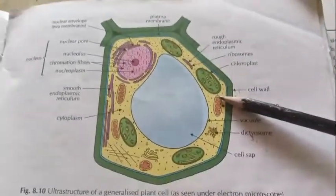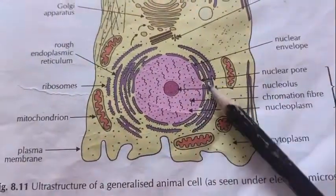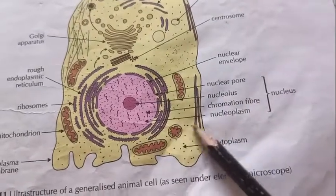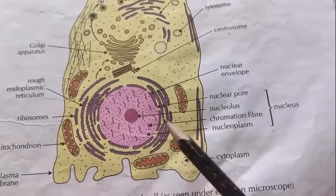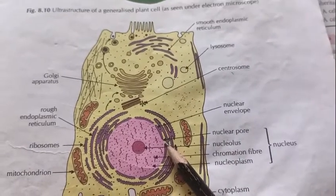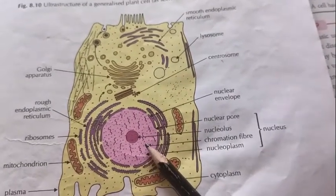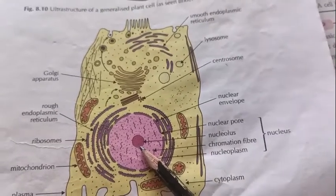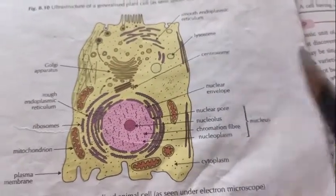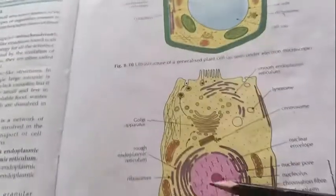Here you can see the proper structure of the plant cell and the animal cell. Looking at the nucleus, it contains the nucleoplasm — the liquid present inside the nucleus — along with chromatin fibers and nuclear pores, similar to how the cell membrane has pores. The nuclear membrane also has nuclear pores. The small spherical structure inside the nucleus is called the nucleolus. The nucleus is present in the center in the animal cell, while in the plant cell it is pushed to the periphery.